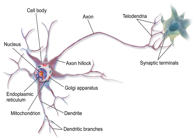Neural coding is concerned with how sensory and other information is represented in the brain by neurons. The main goal of studying neural coding is to characterize the relationship between the stimulus and the individual or ensemble neuronal responses, and the relationships among the electrical activities of the neurons within the ensemble. It is thought that neurons can encode both digital and analog information. The conduction of nerve impulses is an example of an all-or-none response — if a neuron responds at all, then it must respond completely. Greater intensity of stimulation does not produce a stronger signal, but can increase firing frequency.